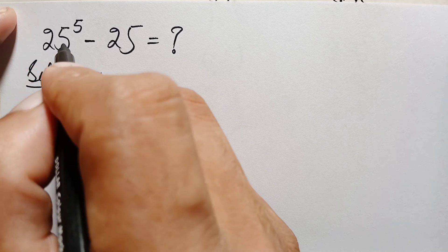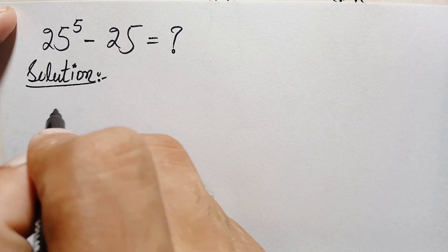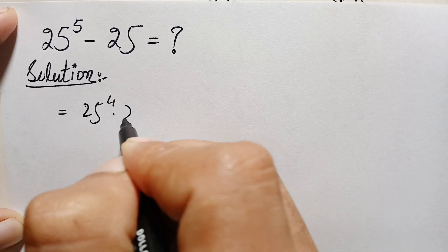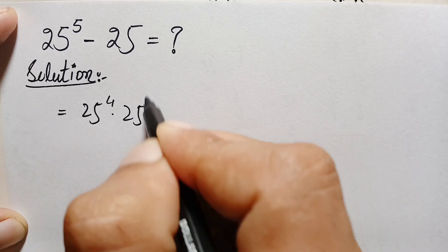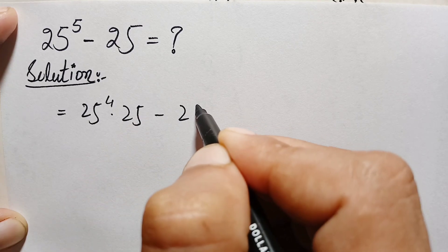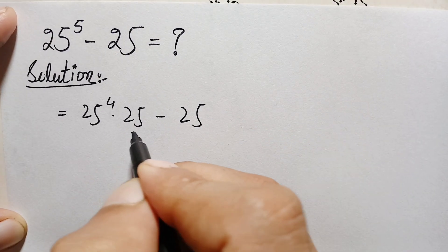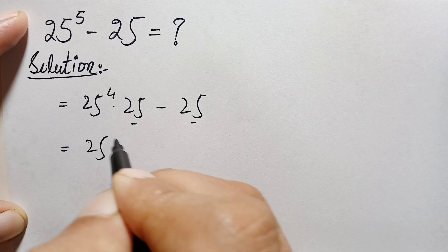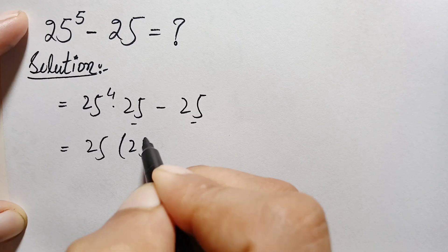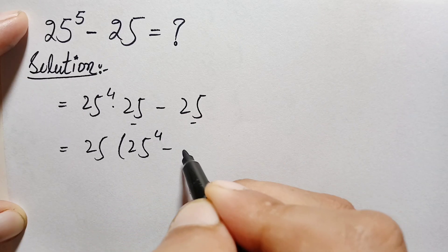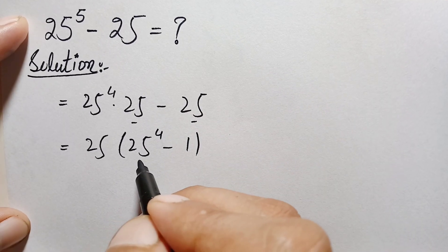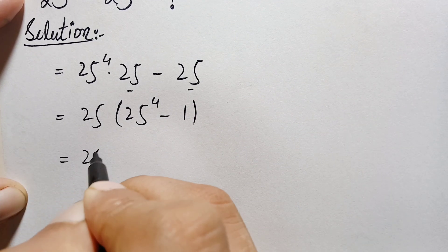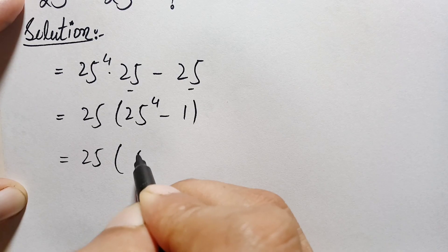First of all, we can write 25 raised to power 5 as 25 raised to power 4 times 25 raised to power 1, or simply 25. So the expression becomes 25 raised to power 4 times 25, minus 25. Now there is 25 common in both terms, so we factor it out: 25 times (25 raised to power 4 minus 1). Next, we can write 25 in exponential form as 5 squared.